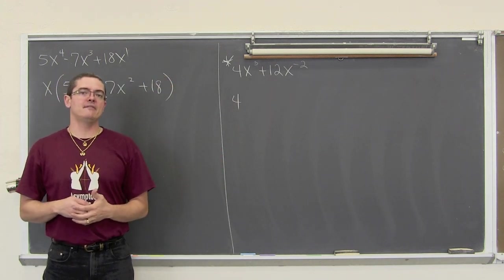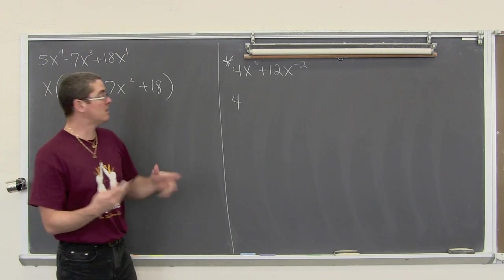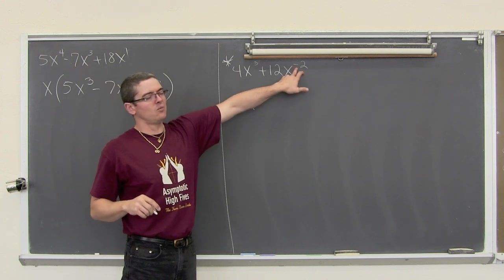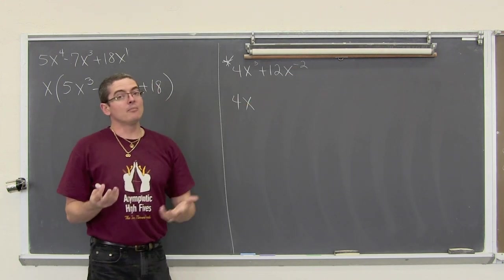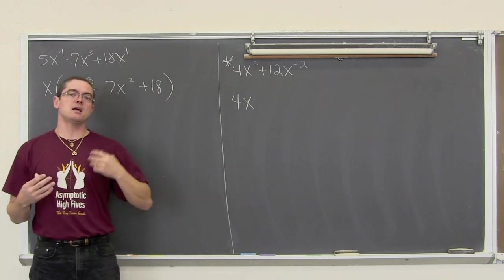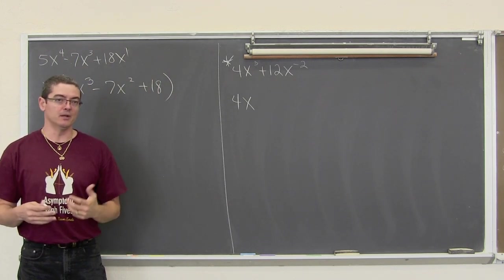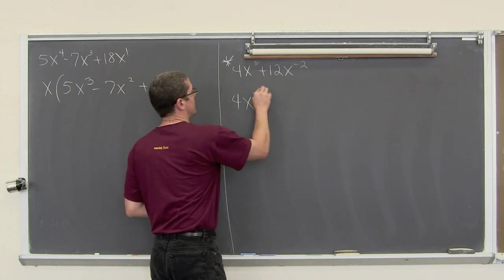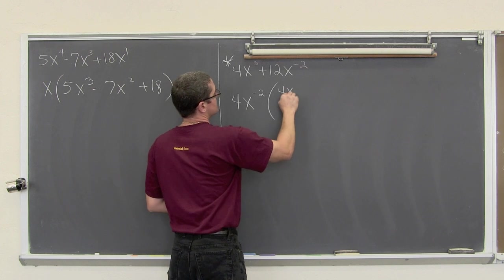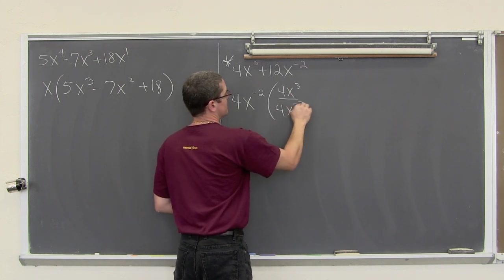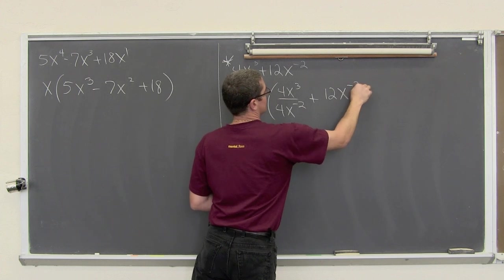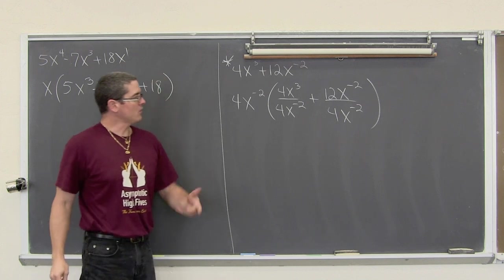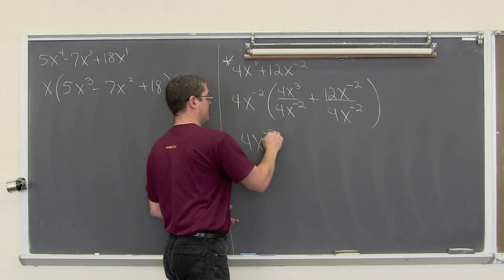Both of these terms also have a variable of x. So, we can take that common x out that is in both of those terms. But, it is a little bit weird that one of our exponents is negative. Remember, in your directions I said, for common variables you want to take out the lowest exponent. And negative 2 is less than 3. So, we are going to factor out that 4x to the negative 2. So, that is going to be 4x cubed divided by 4x to the negative 2 plus 12x to the negative 2 over 4x to the negative 2.